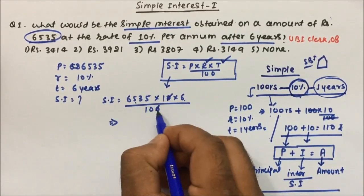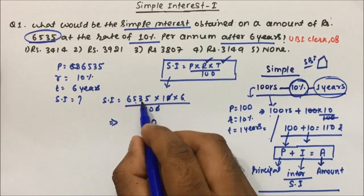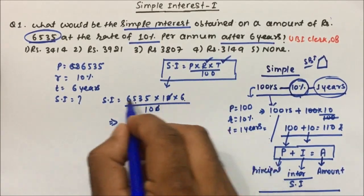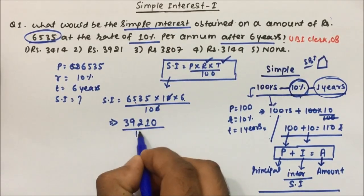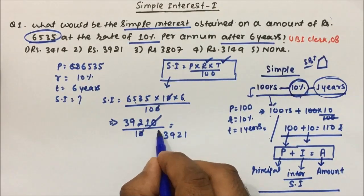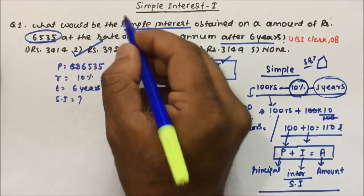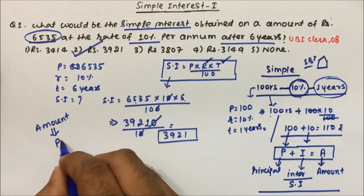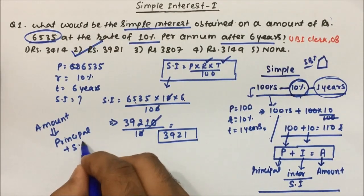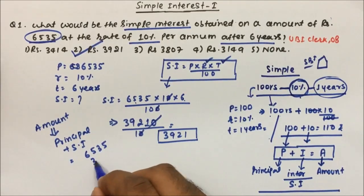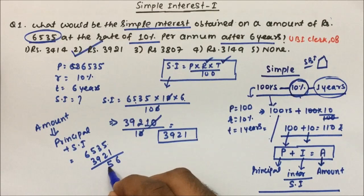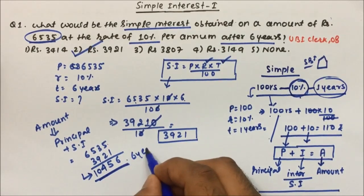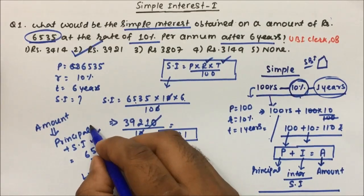One zero from 10 cancels one zero from 100, so we multiply 6535 × 6, then divide by 10. Working it out: 6×5=30, carry 3; 6×3=18+3=21, carry 2; 6×5=30+2=32, carry 3; 6×6=36+3=39. So we get 39210 divided by 10, which gives simple interest = ₹3921.